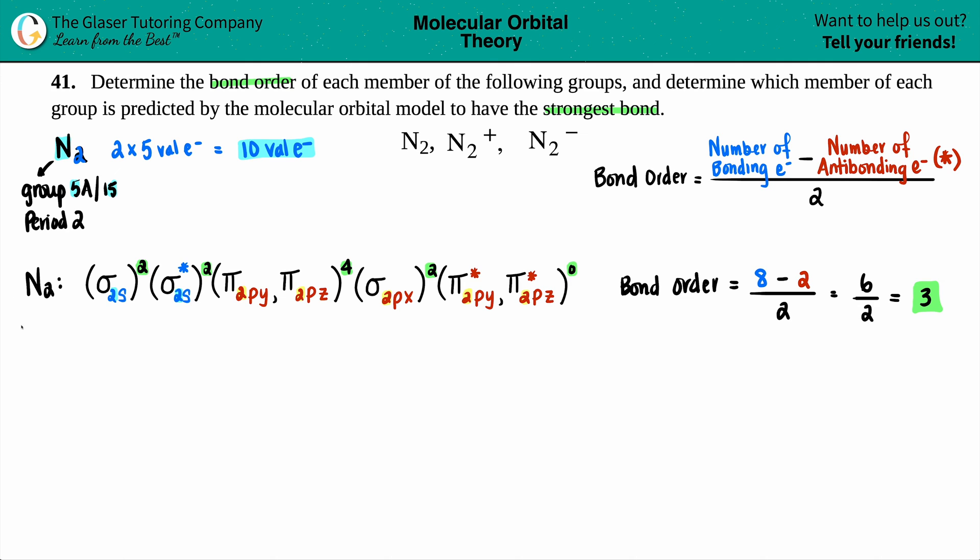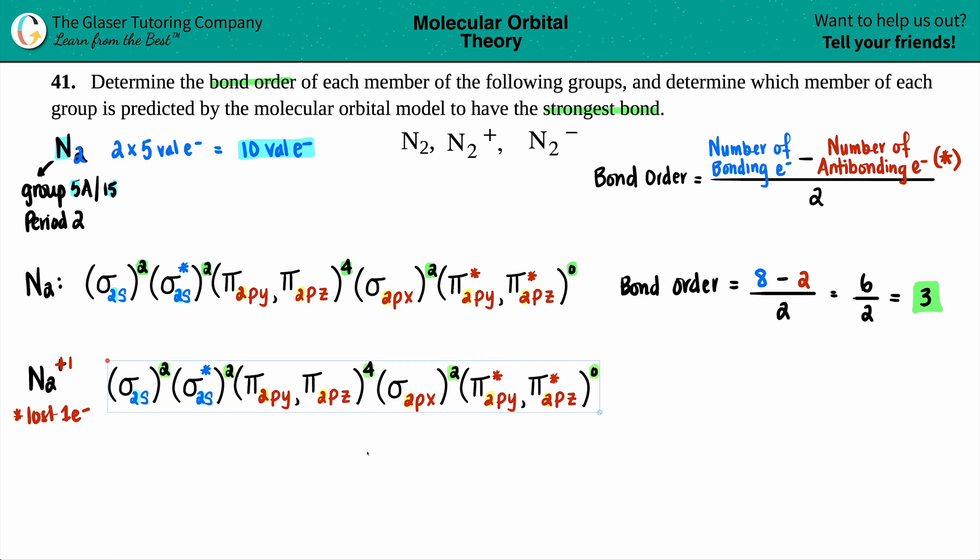Now let's move on to N2 plus. A plus one means you lost one electron from your neutral molecular configuration. I can copy this and put a dot here. All we have to do is get rid of one electron. When you're losing electrons, you go from the back up because you want to lose electrons with the higher amount of energy. So this two will drop down to one.